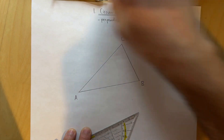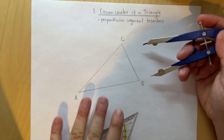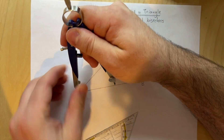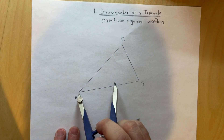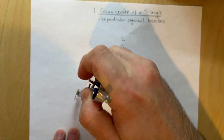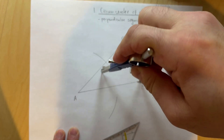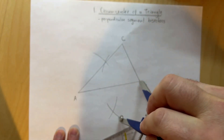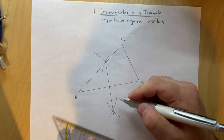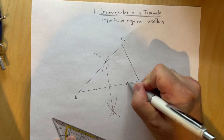We already know how to do this from our previous constructions. We take the compass and select one of the segments — for example, segment AB. We select a width that is more than half of segment AB, draw an arc below and one above. Then we keep the same exact radius, go to B, and draw an arc above and one below. We connect these two arc intersections, and there we have a perpendicular bisector — perpendicular at that point, with the two segments congruent.